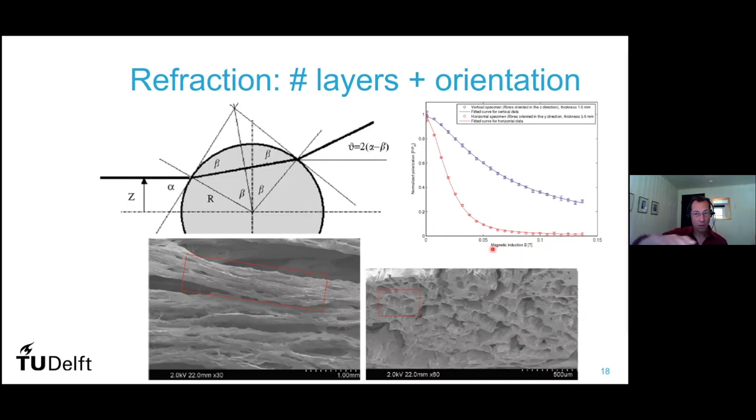When we did the other orientation, when the samples were mounted in the direction where it should not be sensitive to refraction, then we had also a signal. But it's much weaker. And that is showing that these fibers are not perfectly oriented. There's a spread in orientation.